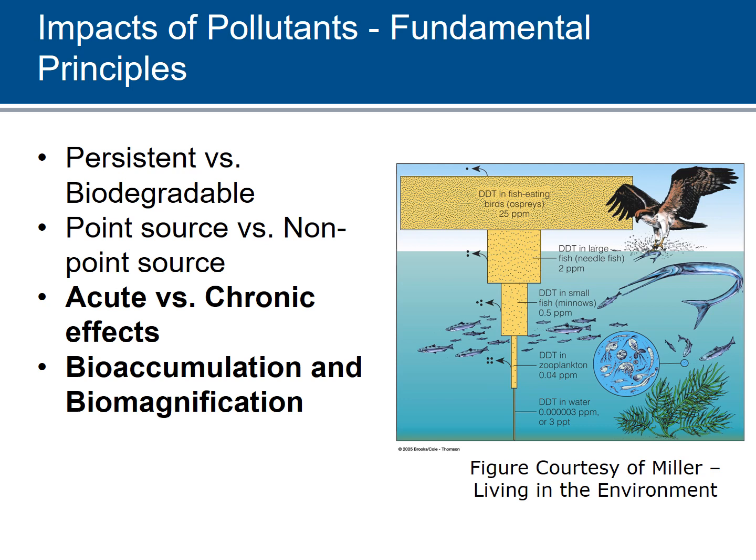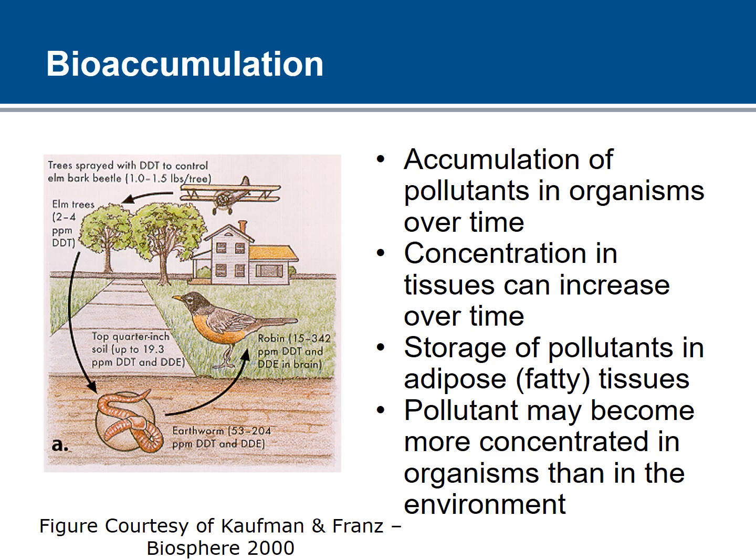Bioaccumulation and biomagnification are also fundamental concepts. Bioaccumulation means the accumulation of pollutants in organisms over time. The organism starts with no pollutant, and then the concentration in their body increases over time because they take up the materials and store them in their adipose or fatty tissues. They can get more concentrated in the organism than in the environment. For example, elm trees sprayed at two to four parts per million of DDT — the concentration in topsoil earthworms and robins can greatly exceed that level because they're accumulating and storing it in their lipids.